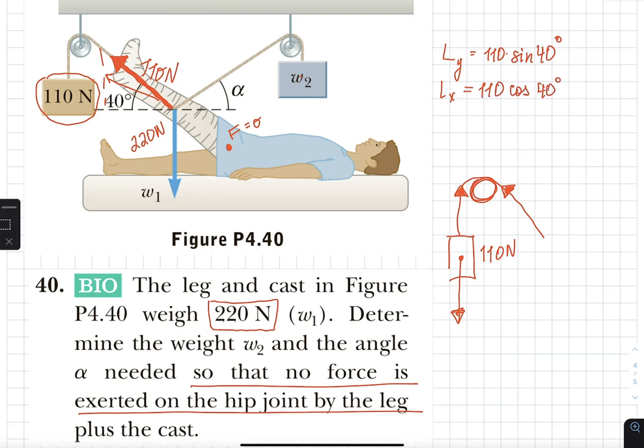So now notice that I have this right here is a horizontal component of my one rope. And since there is no other horizontal force than this, they need to balance each other out.